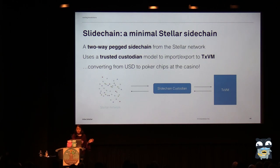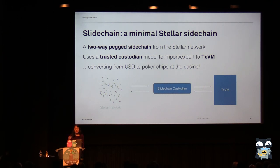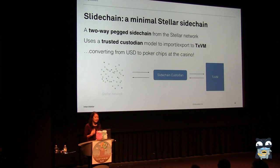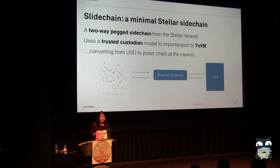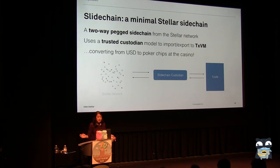You freeze the amount in one network — the US dollar world — and then you get these other tokens with a new set of rules that you can use to play poker or whatever you want to do at the casino. For Slidechain, we use what's called a trusted custodian model, which basically means you trust one entity, the custodian, to faithfully exchange and not steal your money.